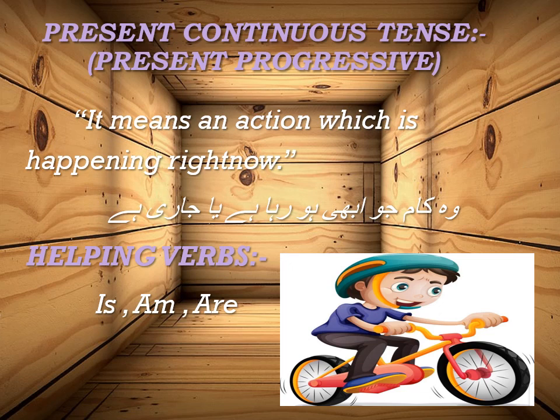First of all I will talk about positive sentences of present continuous tense — affirmative sentences. Present continuous tense is also called present progressive. It means an action which is happening right now — woh kaam jo abhi ho raha hai ya jari hai. Iski pehchan sentence mein: jab raha hai, rahi hai, ya raha hoon use ho, to humay present continuous tense ka formula use karke sentence making karni hai. For example: I am teaching English and you are learning English — yani mein English sikha rahi hoon. Yeh hai present continuous tense ki pehchan.